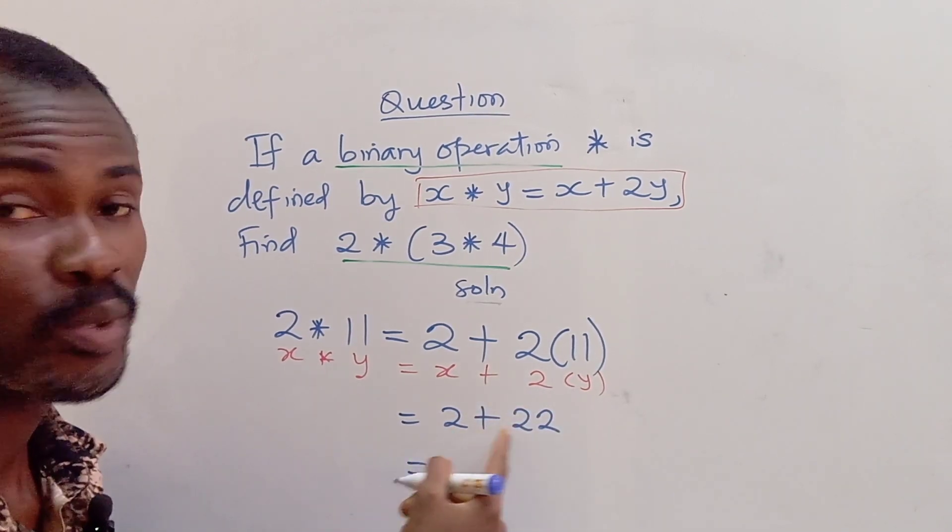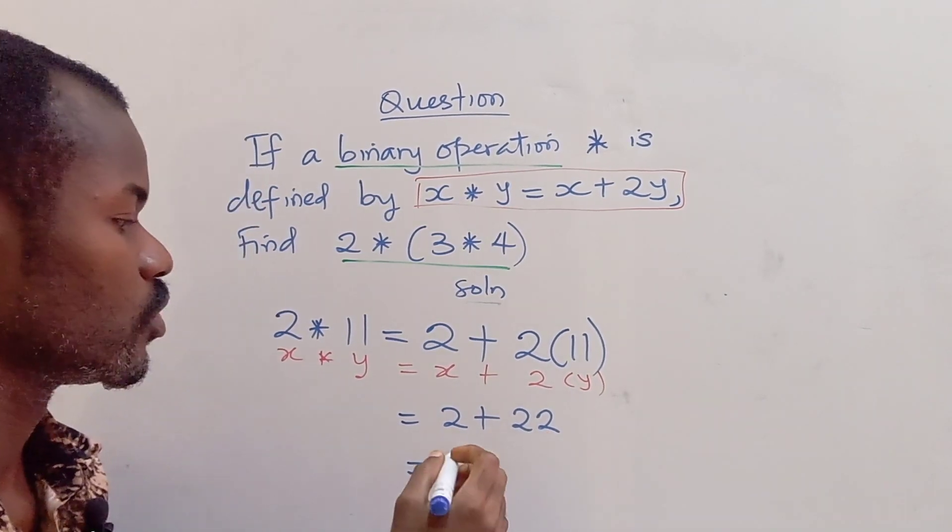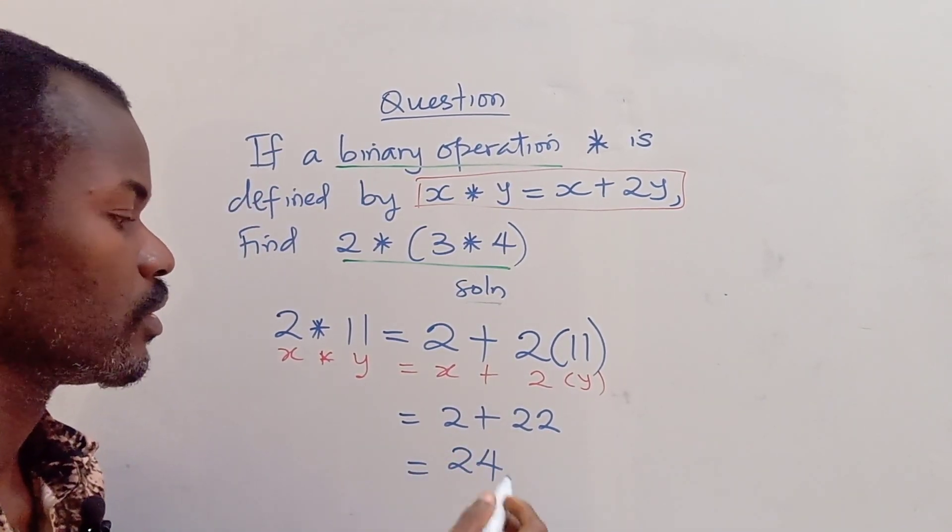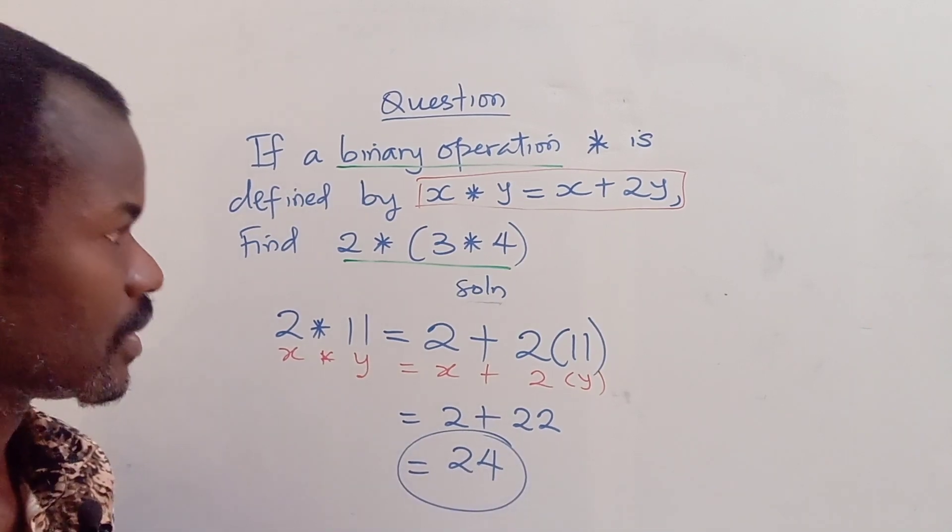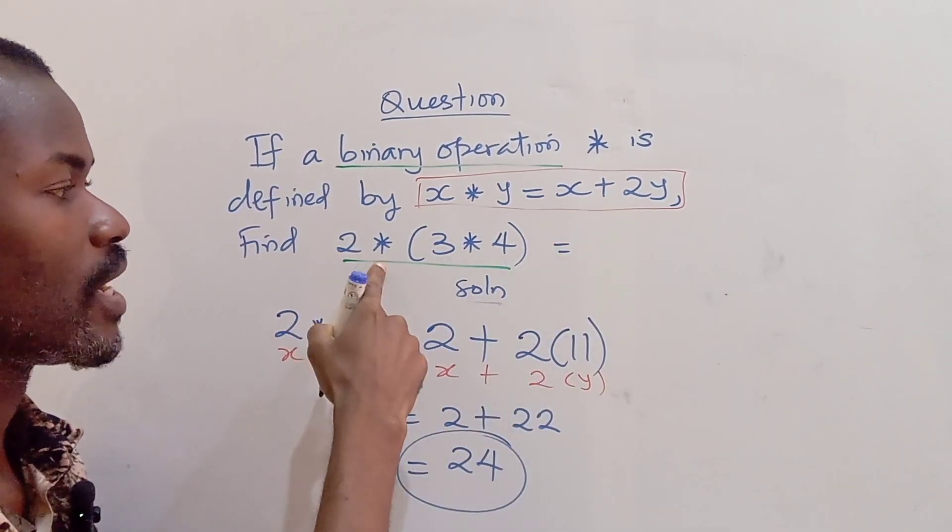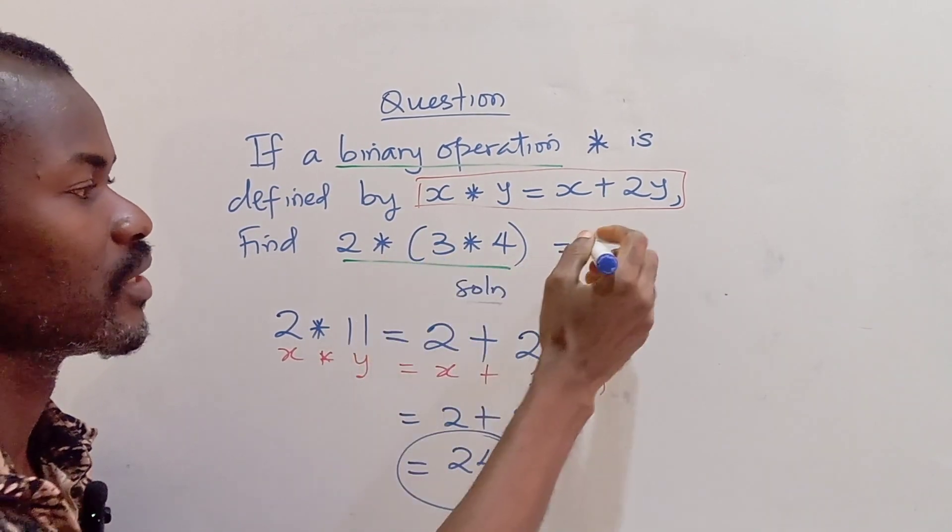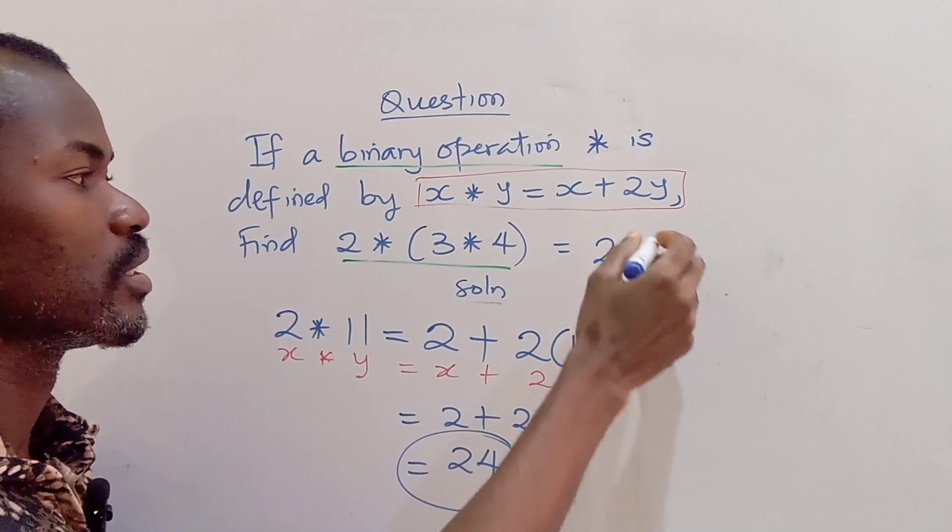2 plus 22 gives us 24. So this gives us the solution to this operation. 2 asterisk (3 asterisk 4) is going to give us 24. That's the final solution to this problem.